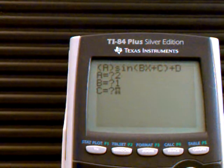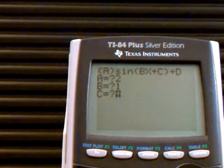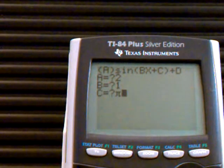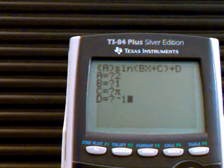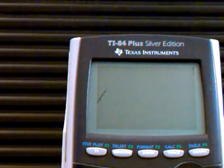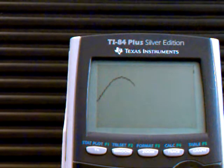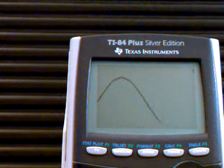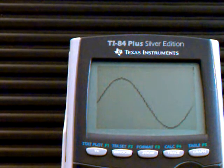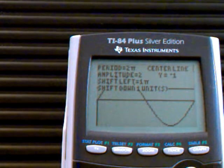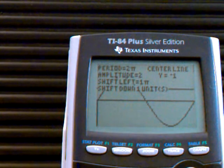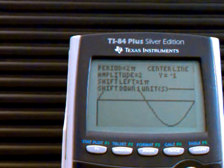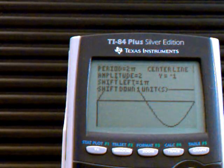Now it graphs the function. It gives me the period, which is 2π. The amplitude is 2. The shift left is 1, or π units.